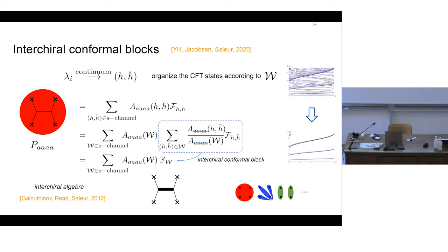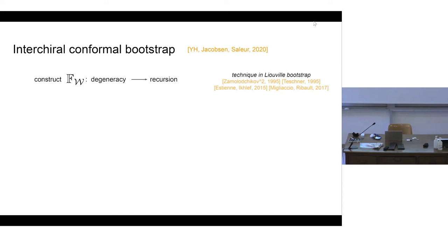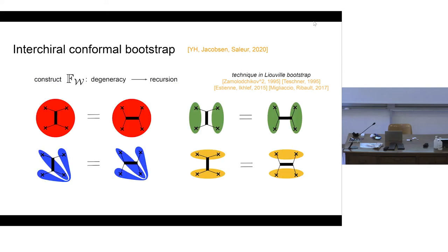To use these interchiral conformal blocks for bootstrap, we use the fact that some operators in the CFT are Virasoro degenerate, leading to recursion relations. One can then group different Virasoro conformal blocks into these interchiral conformal blocks. This type of technique was used in Liouville theory to obtain a bootstrap solution, and once this is done we can write down the bootstrap equation for the four connectivity quantities, defining a linear system for the overall amplitudes which we can numerically solve.